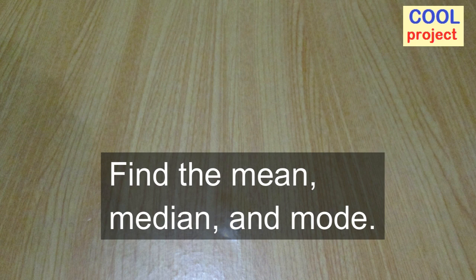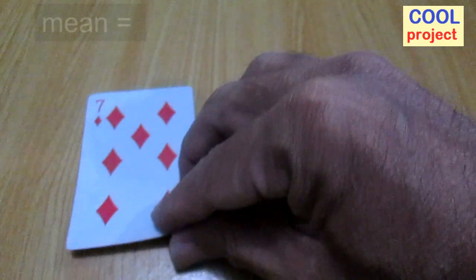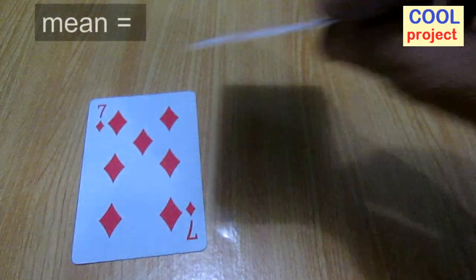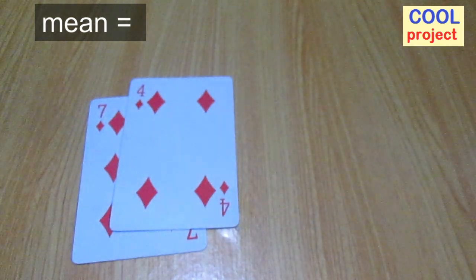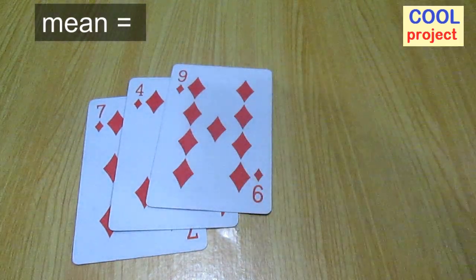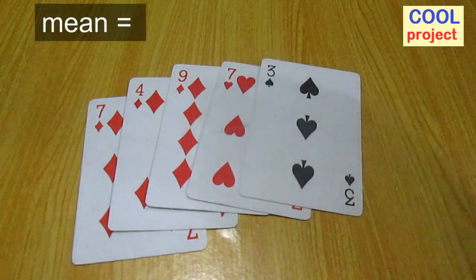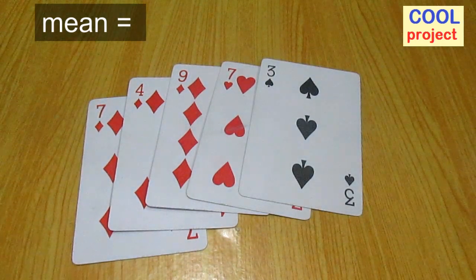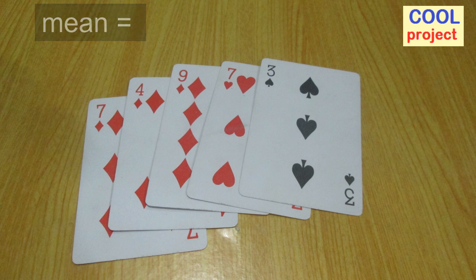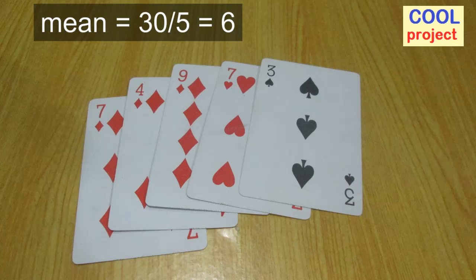Find the mean, median, and mode. 7 plus 4 is 11, plus 9 is 20, plus 7 is 27, plus 3 is 30. 30 divided by 5 is equal to 6.